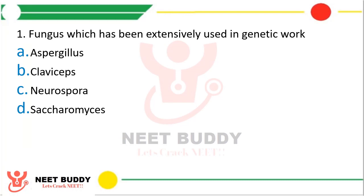Question 11: Fungus which has been extensively used in genetic work is option A Aspergillus, option B Claviceps, option C Neurospora, or option D Saccharomyces. The correct answer is option C, Neurospora.